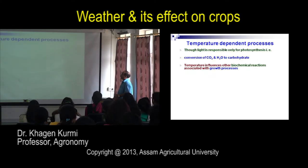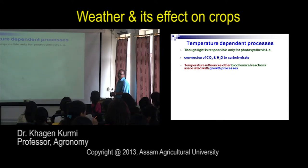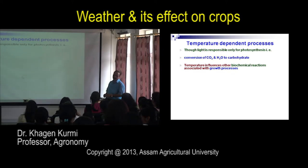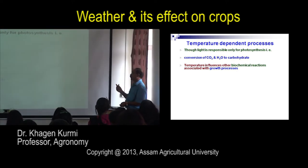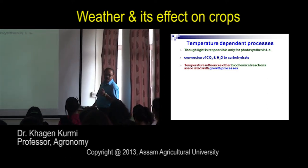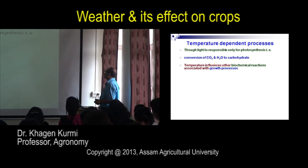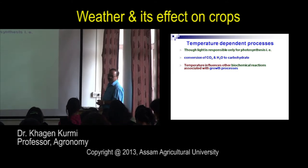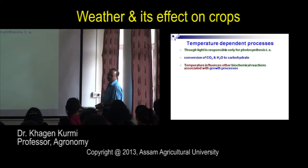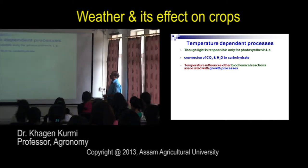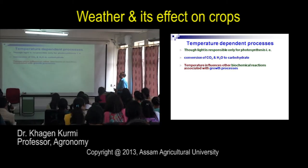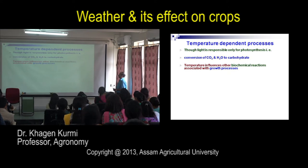Why is temperature important? Temperature-dependent processes include photosynthesis — the conversion of carbon dioxide and water in the presence of solar radiation — but a certain temperature is needed for this reaction. Photosynthesis converts carbon dioxide and water into carbohydrates or assimilates for the plant. Suitable temperature is needed, and that temperature is dependent on solar radiation. Temperature influences biochemical reactions and growth processes.